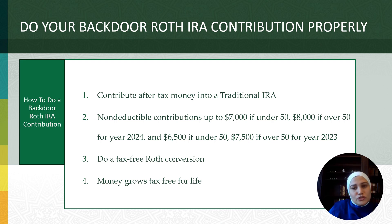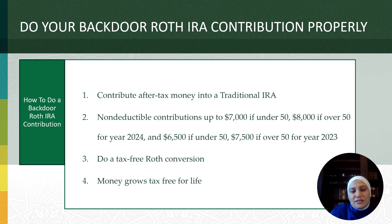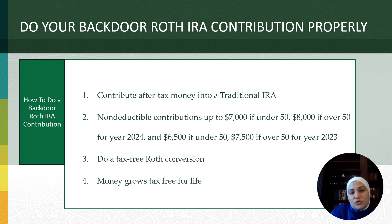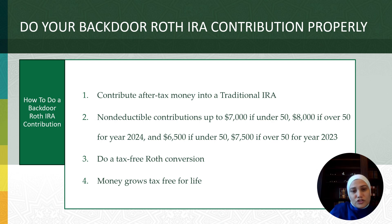Here is how it works. First, you contribute after-tax money to a non-deductible traditional IRA. For 2023, you can contribute a maximum of $6,500 if you are under 50 years old and $7,500 if you are over 50, and you can do this all the way until tax day. The contribution limits increased for 2024 to $7,000 if you are under 50 and $8,000 if you are over 50. You then immediately convert or transfer the money from the traditional IRA into a Roth IRA.